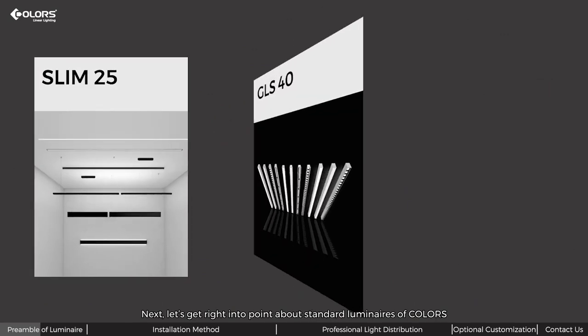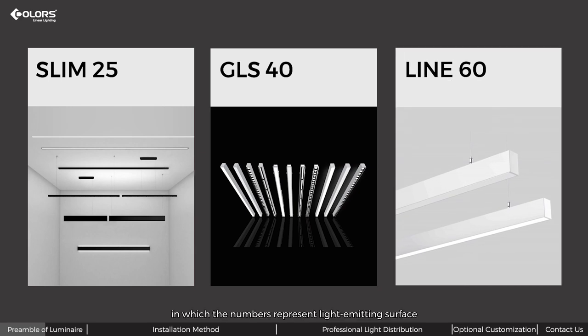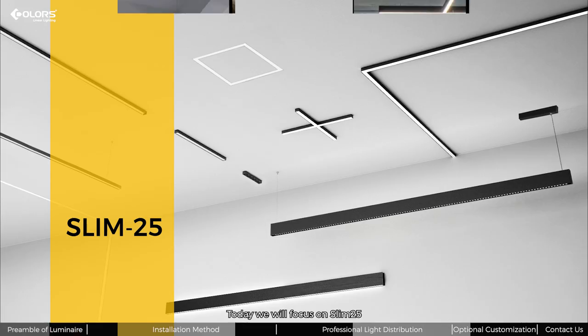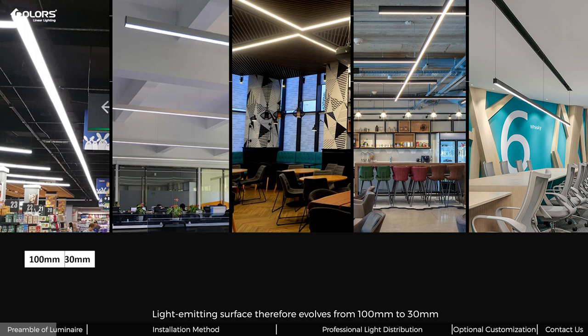Next, let's get right into the point about standard luminaires of Colors: Slim 25, GLS 40, and light system, in which the numbers represent light-emitting surface. Today we will focus on Slim 25. As the light quality improved, refined, and stabilized by counter-chain light-emitting surface, it evolved from 100mm to 30mm.